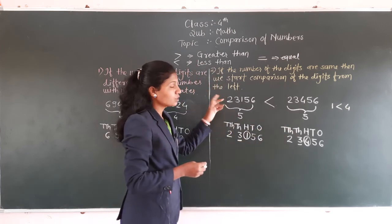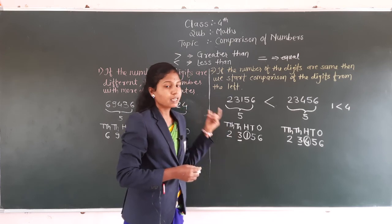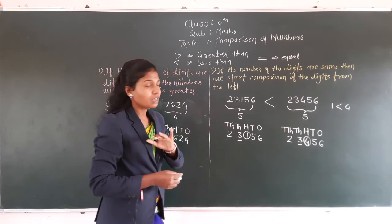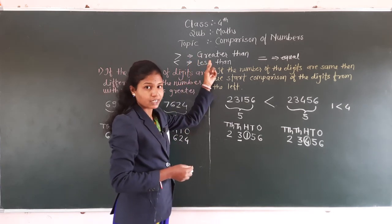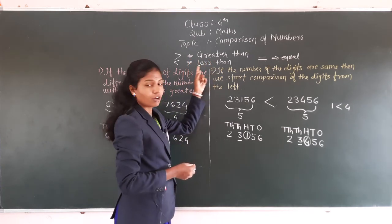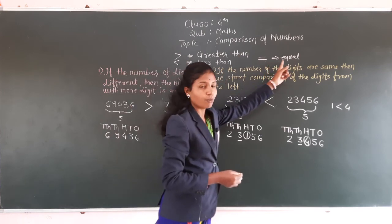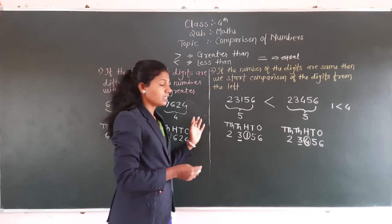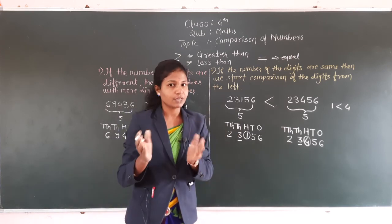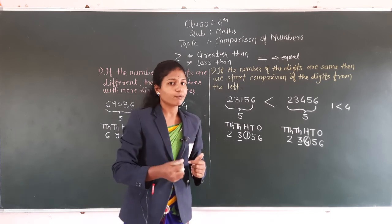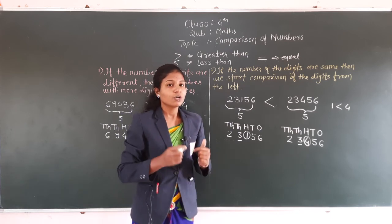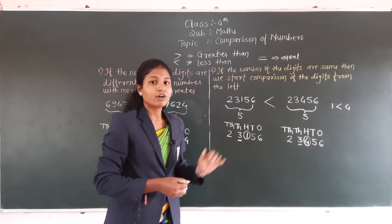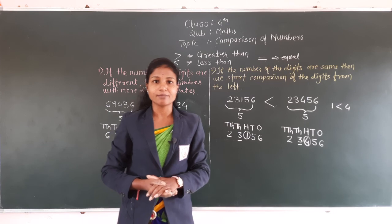तो हमने यह दो rules पढ़े comparison of numbers के, जिसमें हमने दो examples solve किये, और आपको symbols याद रखने हैं. आपको अपनी notebook में ऐसे ही अलग-अलग 4 digits या 5 digits के numbers लो और अलग-अलग problems solve करके देखो. In the further video, we will discuss the next concept. And for today's class, thank you very much.